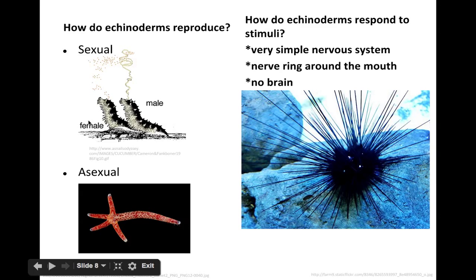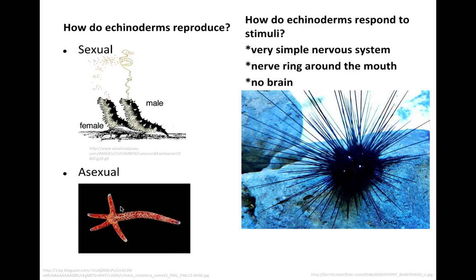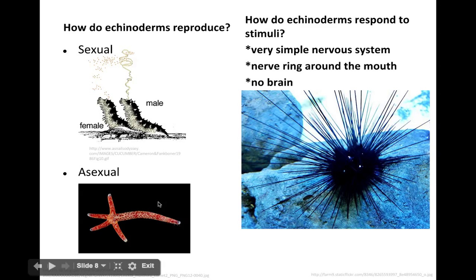Echinoderms reproduce both sexually and asexually. With sexual reproduction, there needs to be a male and a female — male releasing sperm, female releasing eggs — and just like many other aquatic invertebrates, they fertilize in the water. There is also the option for asexual reproduction, where they can break off or bud off an arm that will grow into a new organism of that same species, such as a sea star.